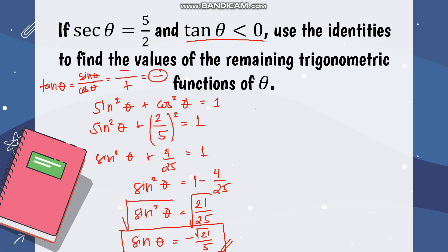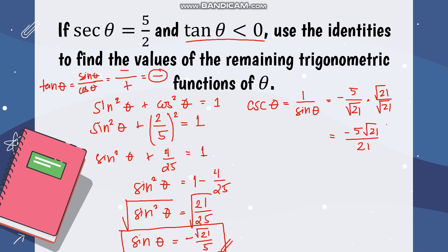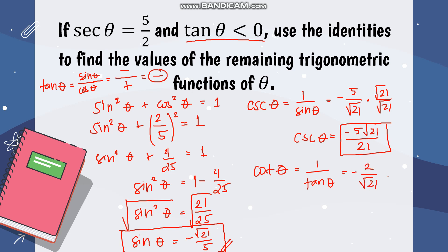For the remaining functions, we just take reciprocals. Cosecant theta is one over sine theta, so the reciprocal of negative square root of twenty-one over five gives negative five over square root of twenty-one. Rationalizing by multiplying numerator and denominator by square root of twenty-one gives cosecant theta equals negative five square root of twenty-one over twenty-one. Cotangent theta is the reciprocal of tangent theta: the reciprocal of negative square root of twenty-one over two is negative two over square root of twenty-one, which rationalizes to negative two square root of twenty-one over twenty-one.